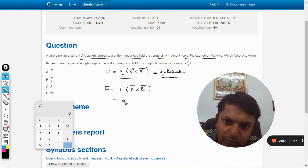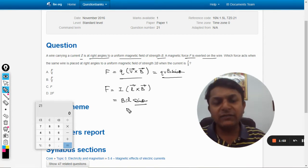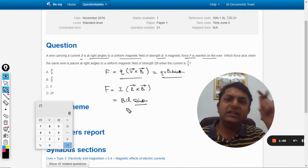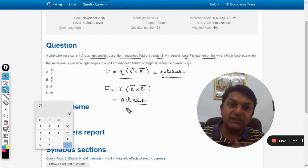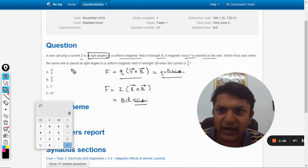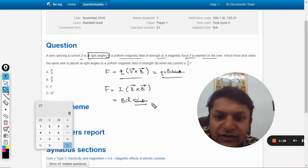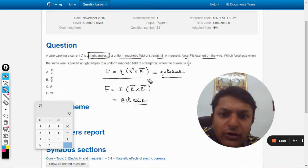The scalar form of this will be bil sin theta, where theta is the angle between the length of the wire and the magnetic field. It is given as 90 degrees here in both of these questions. The wire is at right angles with the magnetic field in both cases, so theta will be 90 degrees, so f is equal to this.